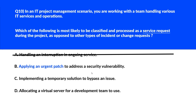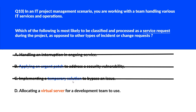Option C — 'implementing a temporary solution to bypass an issue' — this is a workaround, not a service request. It's a temporary fix rather than an ordinary service request, so we'll eliminate it. Option D — 'allocating a virtual server for a development team to use' — providing a virtual server is a typical service request for a team to perform their work in a project. This is the correct answer.